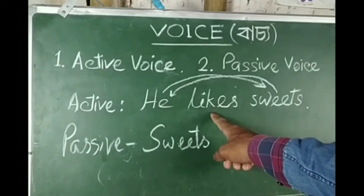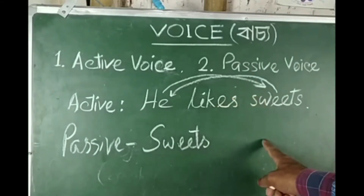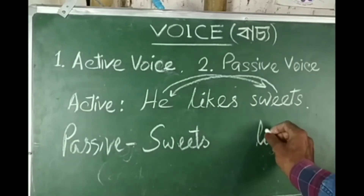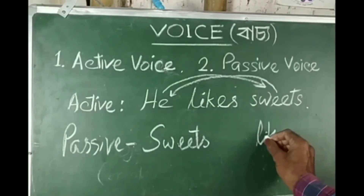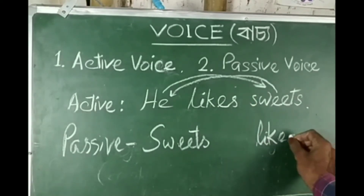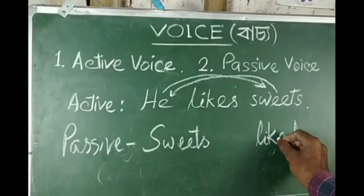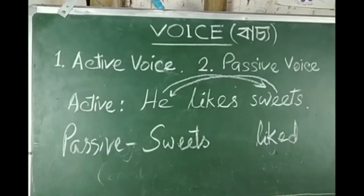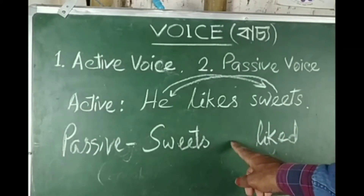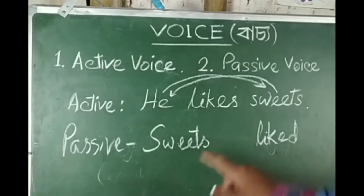The verb 'like' in past participle form becomes 'liked'. Then add the appropriate form of the auxiliary verb 'be'. For simple present tense, use the correct form of 'be' according to the subject.